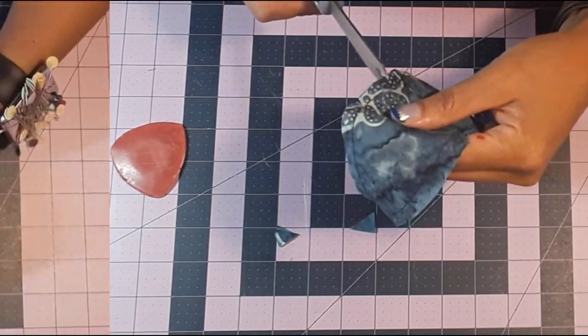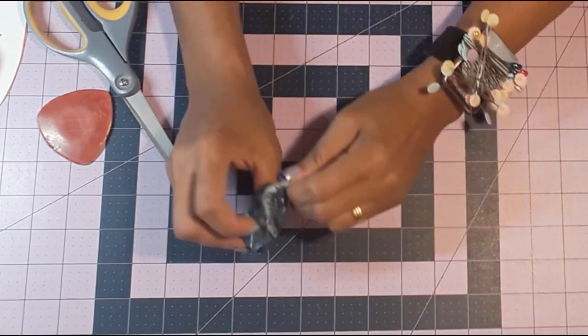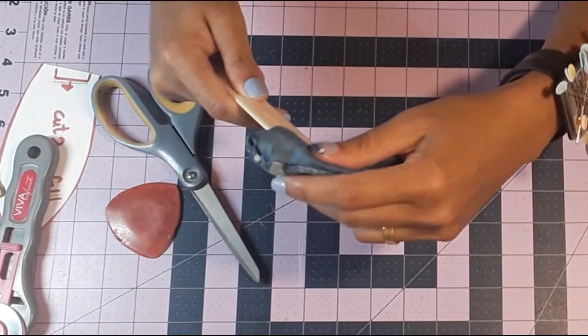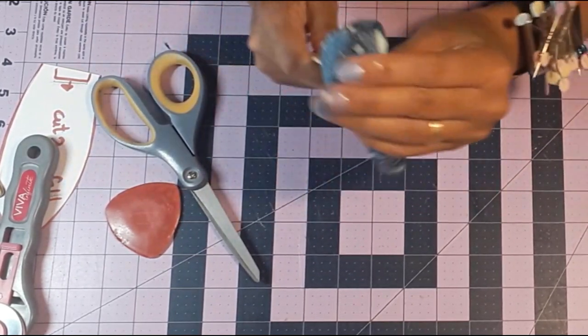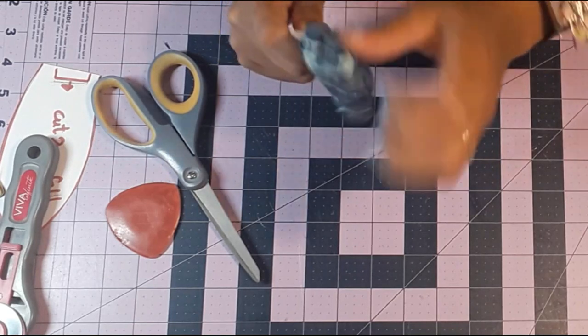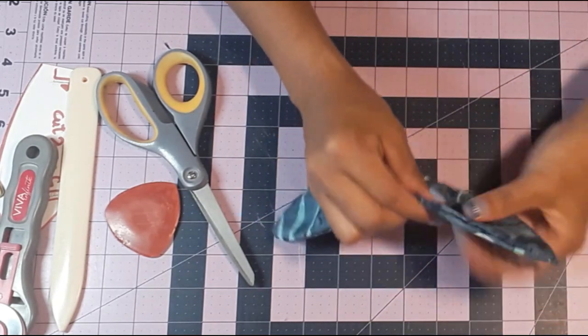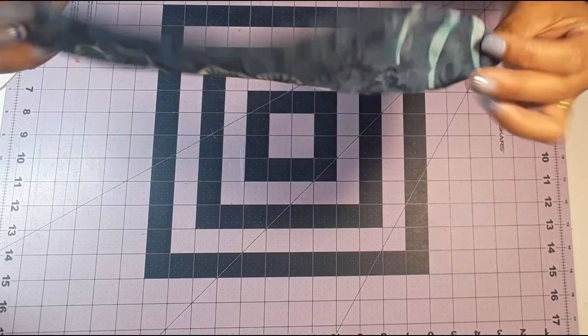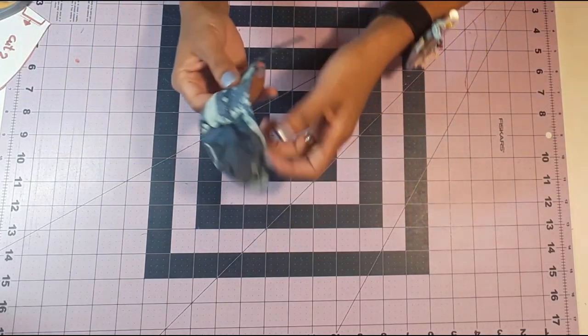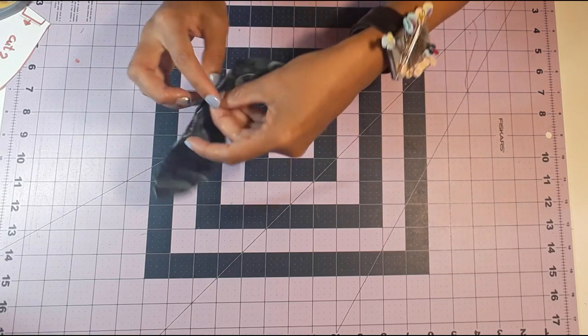Now we're going to turn it inside out. Give it a good press and now we're going to close the opening that we left open. I glued it with fabric glue. You can machine stitch it, it's up to you.